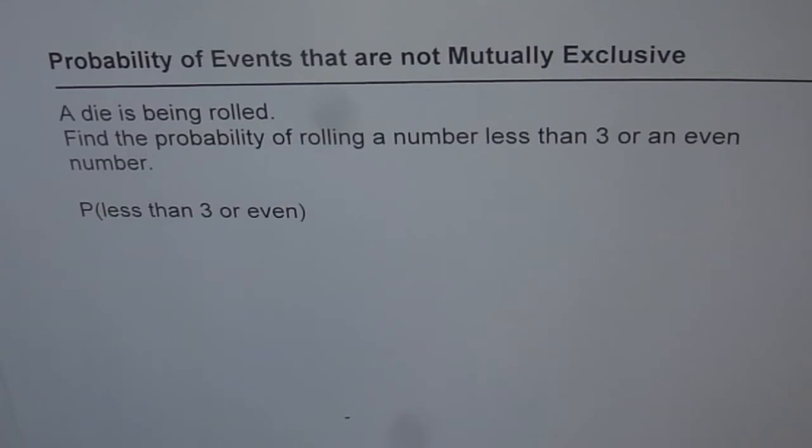It means that if there are two events, then there is some overlap in between. Those events are not mutually exclusive. Now we will see with the help of an example and try to understand how the event is not mutually exclusive.